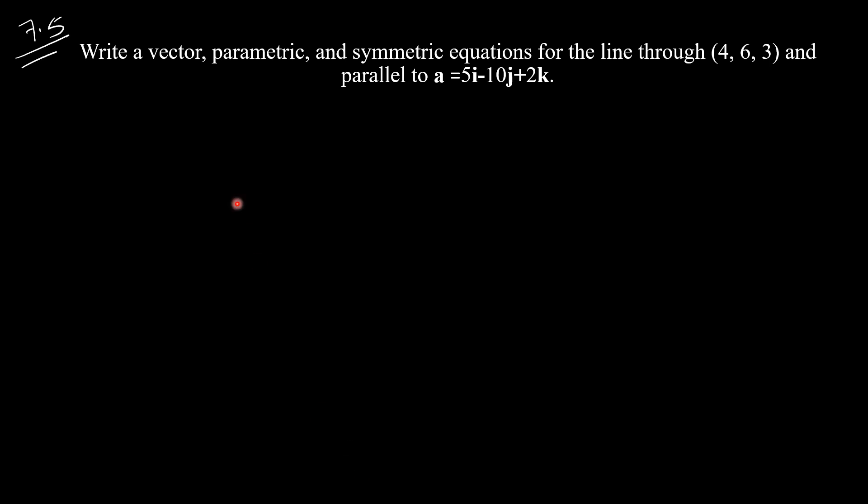Let's find the parametric equation first. With the parametric equation, the formula is x equals x0 plus AT, y equals y0 plus BT, and z equals z0 plus CT, where A, B, and C are the components of vector A.